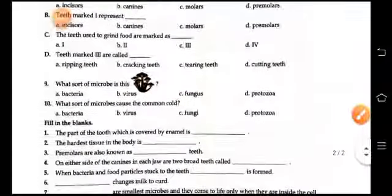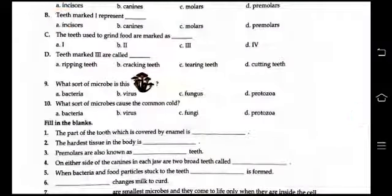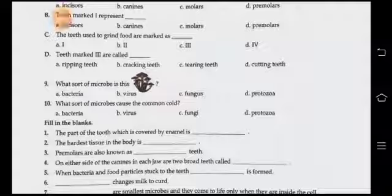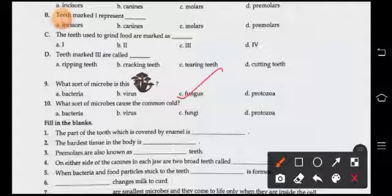Now number 9 is, what sort of microbe is this? Bacteria and viruses they are very small, so it is a fungus. Okay, so take fungus. Now what sort of microbes causes the common cold? Virus. Okay.